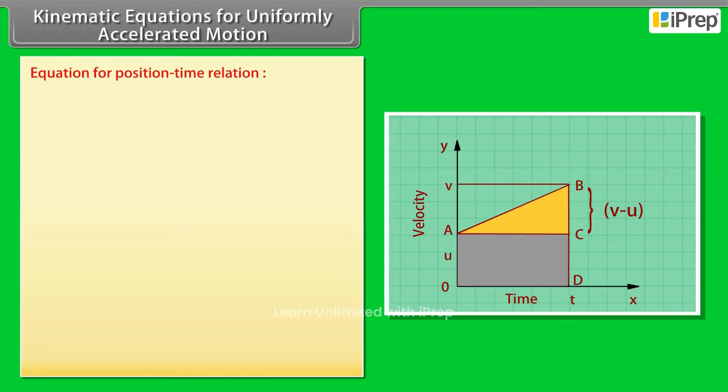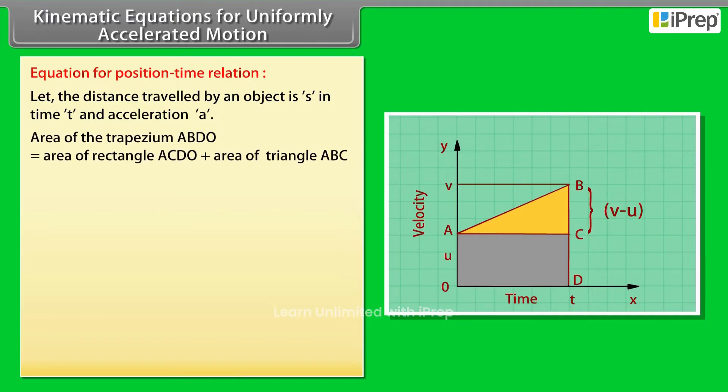Equation for position-time relation. Let the distance travelled by an object be S in time T and acceleration A. Here, the distance travelled by the object can be obtained by the enclosed area ABDO. Area of the trapezium ABDO equals area of rectangle ACDO plus area of triangle ABC, which equals OD times OA plus one-half BC times AC.